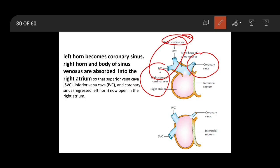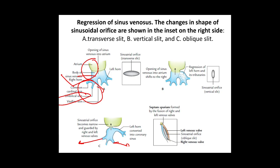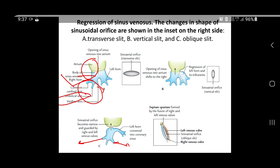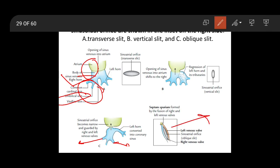Initially these three openings are very close to each other. Now in this diagram you can see the oblique slit — the sinoatrial orifice which has been converted into an oblique slit. It has got two walls: the orangish one is the left venous wall and the bluish one is the right venous wall.